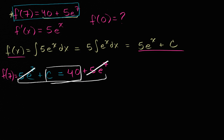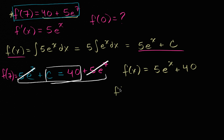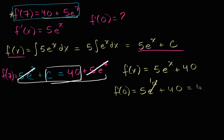When you look at this, it's pretty easy to figure out what c is going to be. You can subtract 5e to the seventh from both sides, and you see that c is equal to 40. So we can rewrite f of x as 5e to the x plus 40. From that, we can evaluate f of zero: f of zero is 5 times e to the zero power plus 40. e to the zero is one, so it's five times one, which is five, plus 40, which is equal to 45.